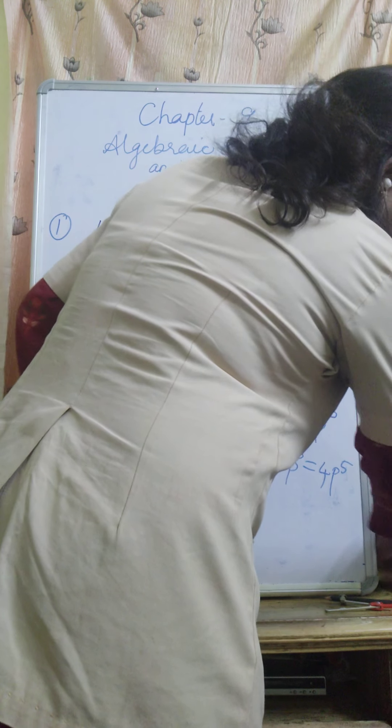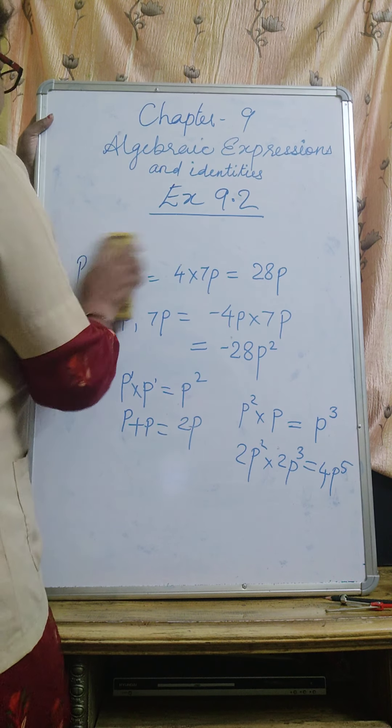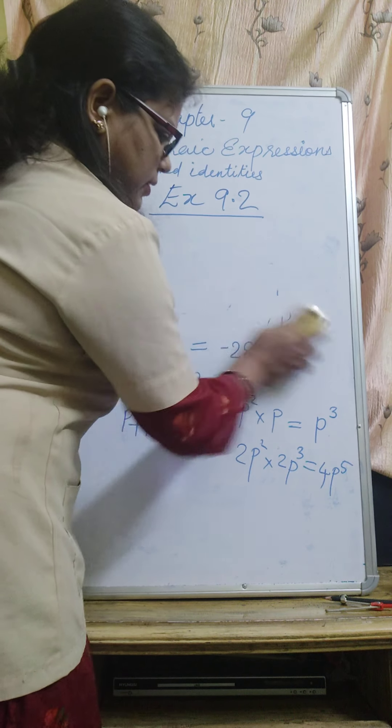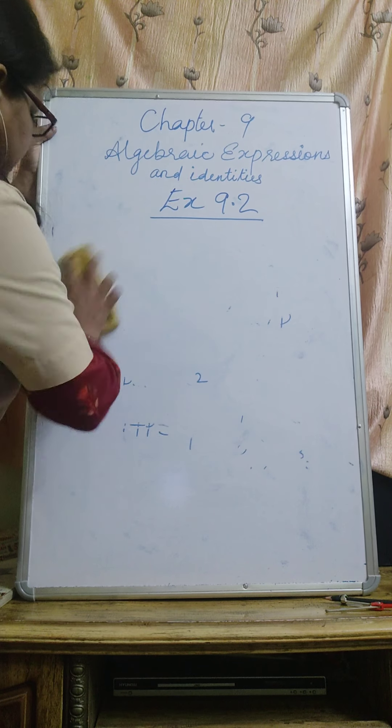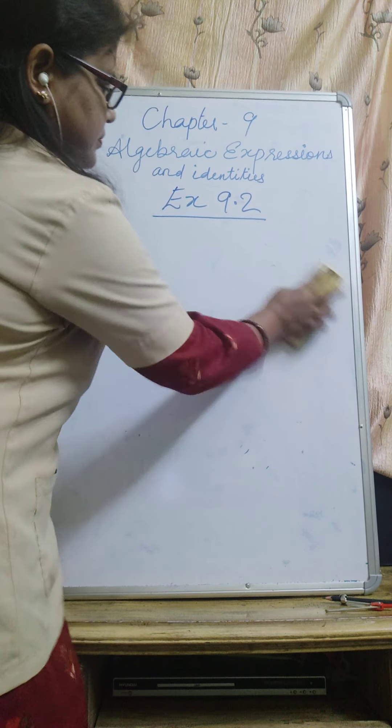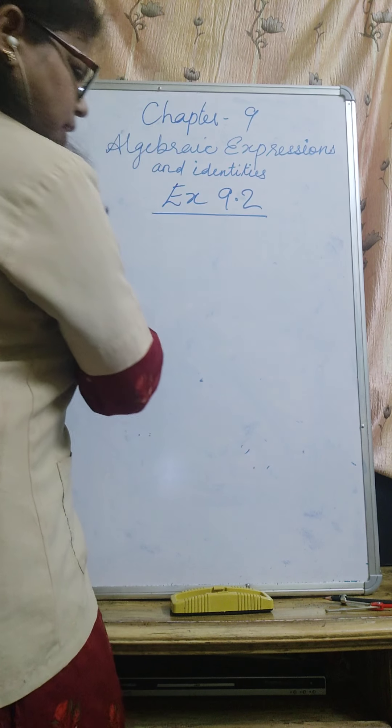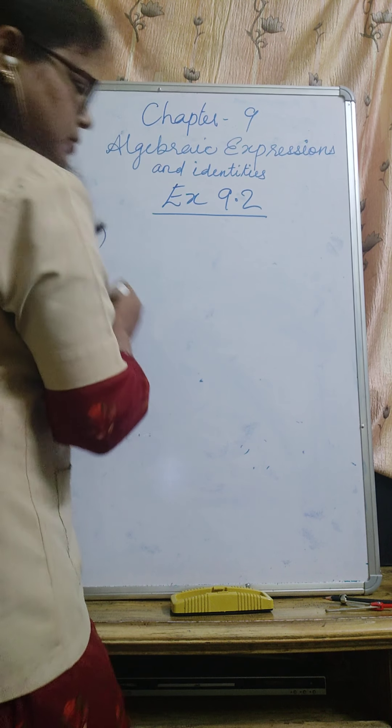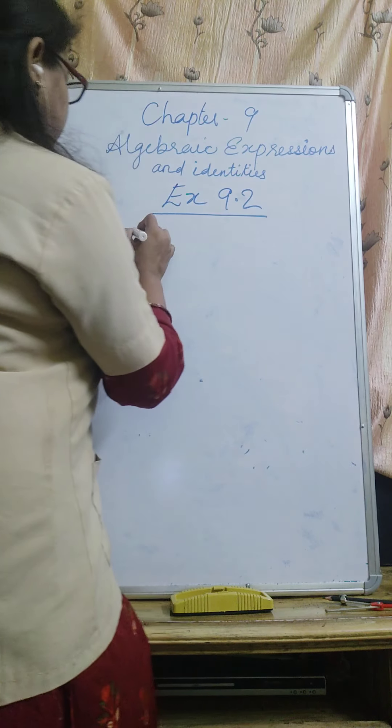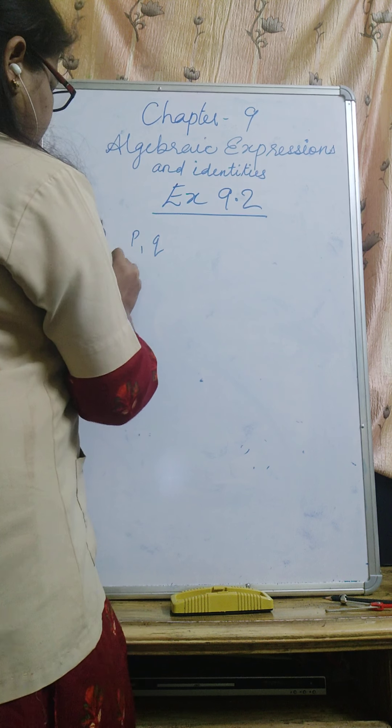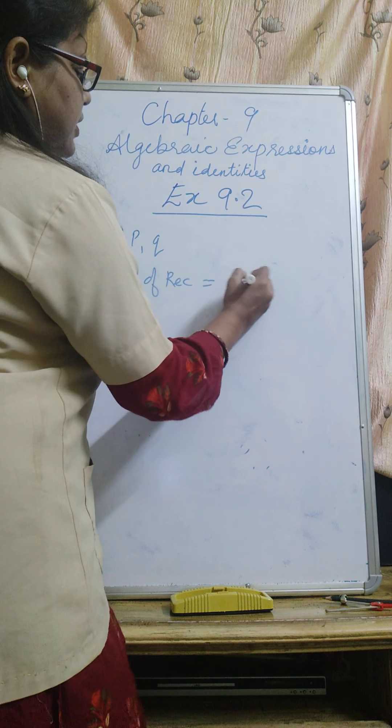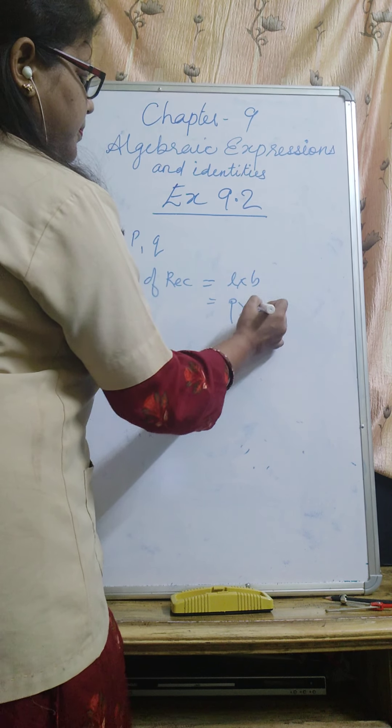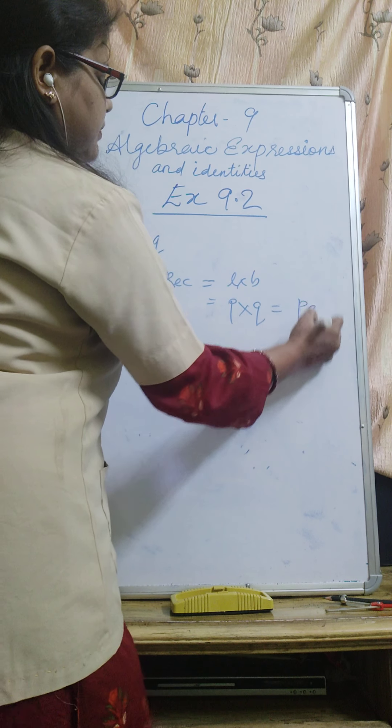Now the second question is given. Find the area of the rectangles. Length and breadth is given, we have to find the product. The first question is P and Q. Area of rectangle, the formula is length into breadth. Length is P, breadth is Q, so it will become PQ.